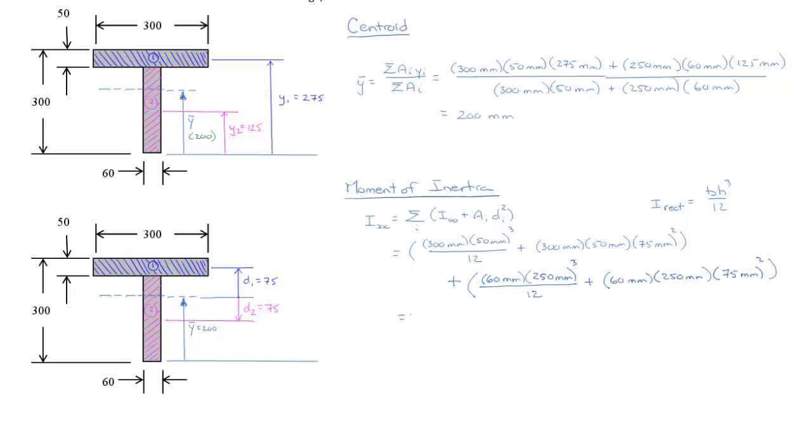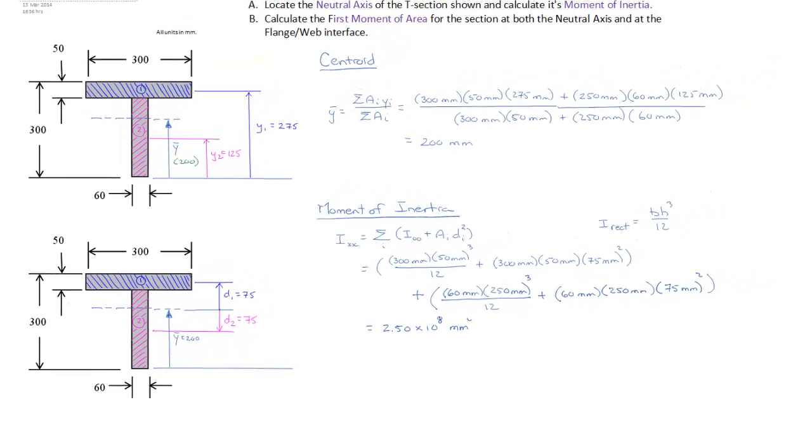So now it's just a simple matter of doing the math, and we can figure out that the moment of inertia of this cross section is 2.50 times 10 to the 8th millimeters to the 4th.